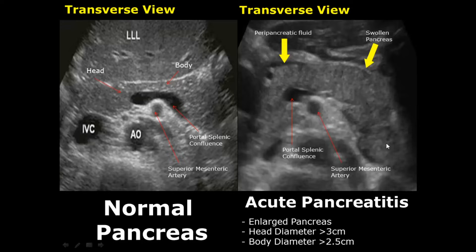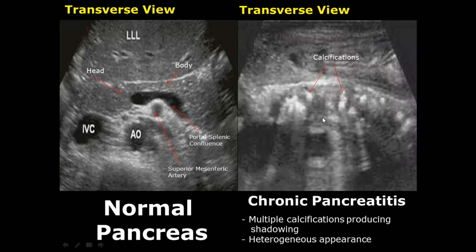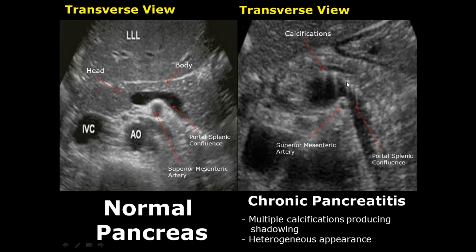The pancreas has an overall heterogeneous appearance and peripancreatic fluid is also noted. In chronic pancreatitis there is calcification of the pancreas, leading to hyperechoic calcifications which produce shadowing. Here is another image of chronic pancreatitis showing smaller calcifications and also some comet tail artifacts.